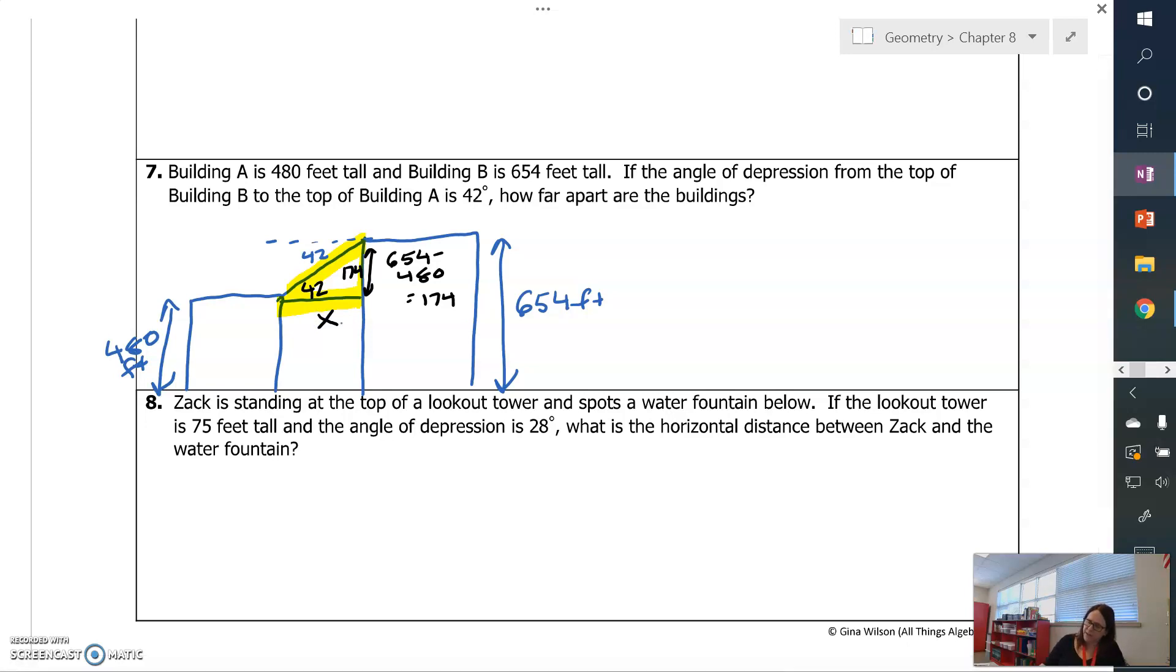So now I have a triangle drawn. I'm going to label my sides. The 174, that's opposite. X is adjacent. I'm going to choose my trig ratio. It's tangent again. So tangent of 42 equals 174 over X. So that means X is 174 over the tangent of 42.